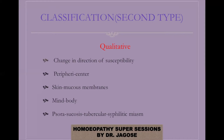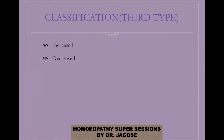In qualitative susceptibility, there is a change in the direction of susceptibility — it deals with quality. This is seen when susceptibility changes its direction, for example when disease travels from periphery to centre, from skin to mucous membranes, from the mind to the body, or it goes from psora to sycosis to tubercular to the syphilitic miasm. The third type of classification is simply increased or decreased susceptibility, which can also be seen in a disease condition.